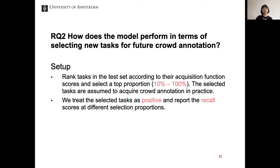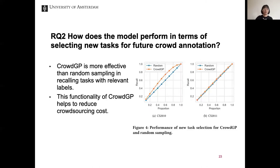The second research question is how the model performs in selecting new tasks for future crowd annotation. We rank tasks in the test set by their acquisition function scores and select a top proportion, reported as recall. Figure 4 shows that CrowdGP is more effective than random sampling in recalling tasks with relevant labels, which helps reduce crowdsourcing cost.